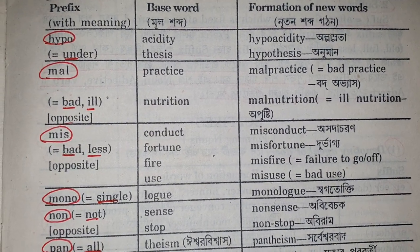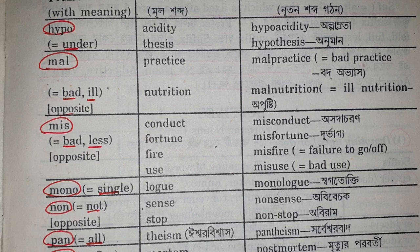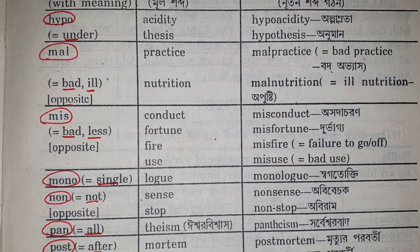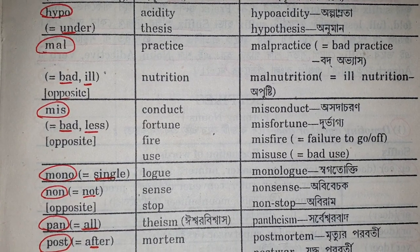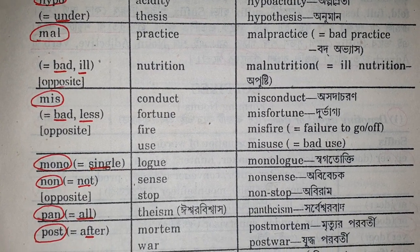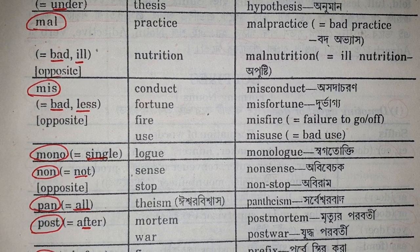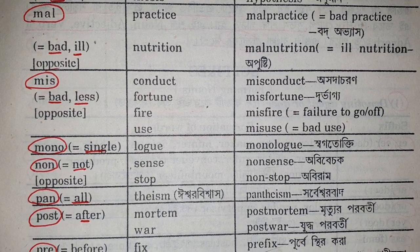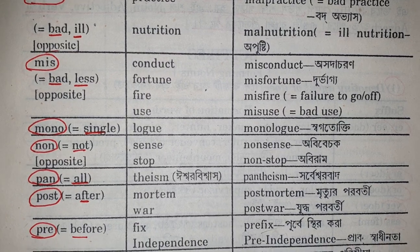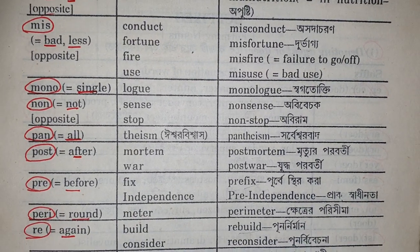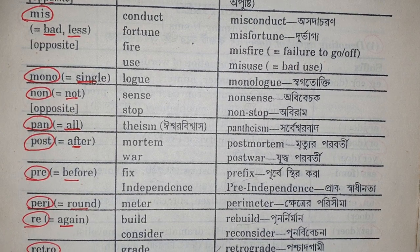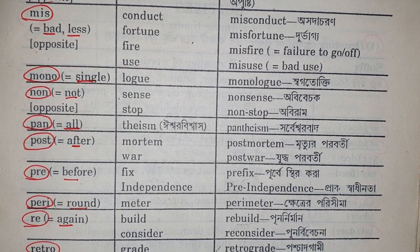Mal with the meaning of bad or ill, which will give the opposite sense — practice, malpractice; nutrition, malnutrition. Mis with the meaning of bad or less, which will give the opposite sense — conduct, misconduct; fortune, misfortune; fire, misfire; use, misuse. Mono with the meaning of single — log, monologue. Non with the meaning of not, which will give the opposite sense — sense, nonsense; stop, non-stop.